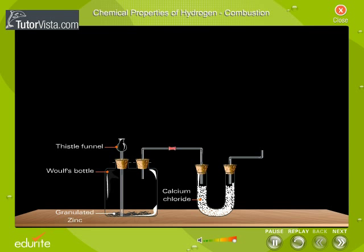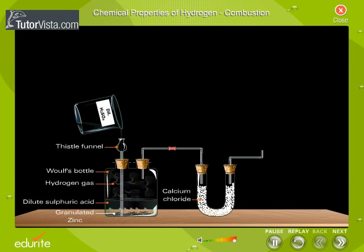Zinc granules are taken in a Woulff's bottle and the apparatus is arranged as shown here. Dilute sulphuric acid is dropped into the Woulff's bottle through the thistle funnel.